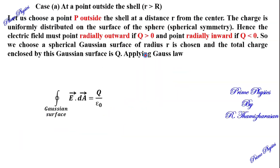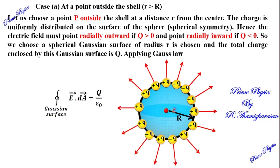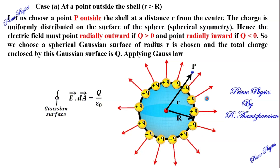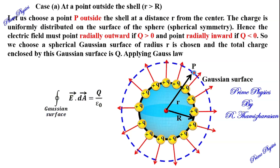Now, inside the shell there is a point P at distance r from the center. The electric field is along the same axis — we can consider spherical symmetry. We consider the Gaussian surface, which is an imaginary sphere.